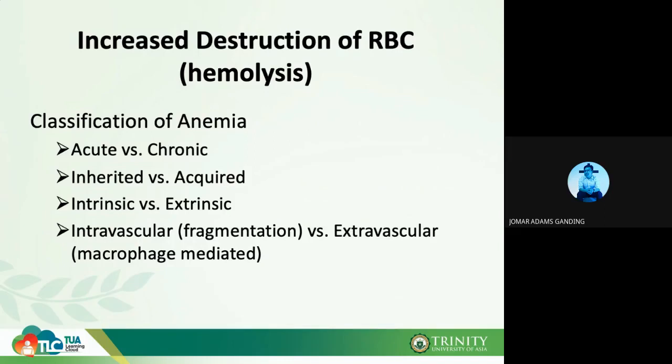When we say acute versus chronic hemolytic anemia, we're talking about the onset of the disease and the onset of signs and symptoms. In acute hemolytic anemia, the hemolysis occurs rapidly — upon exposure to a particular trigger, substance, condition, or environment, your red blood cells will start to lyse immediately.